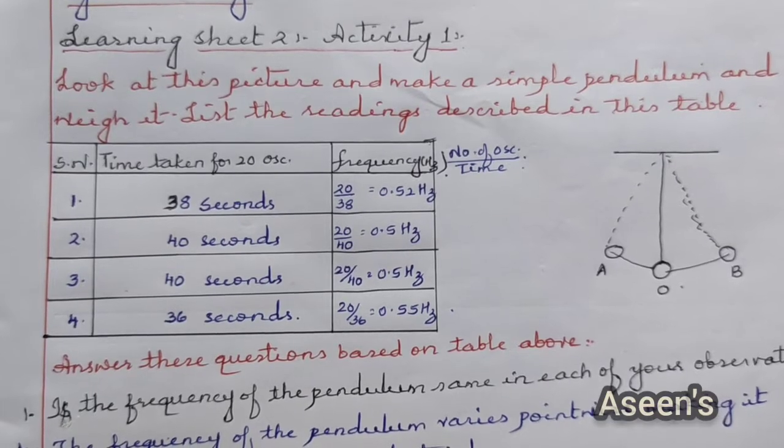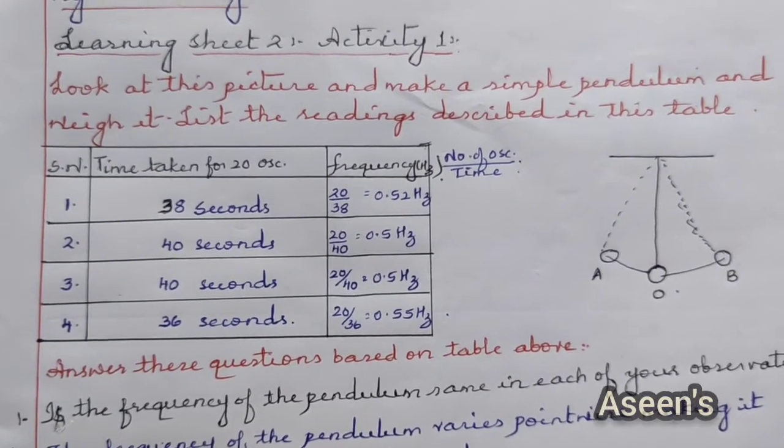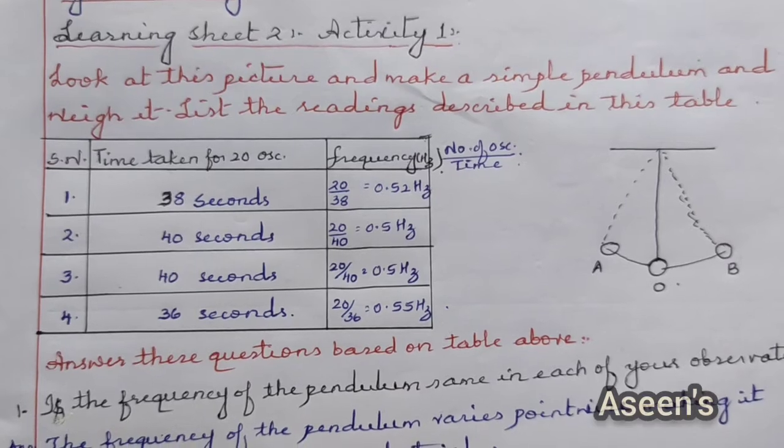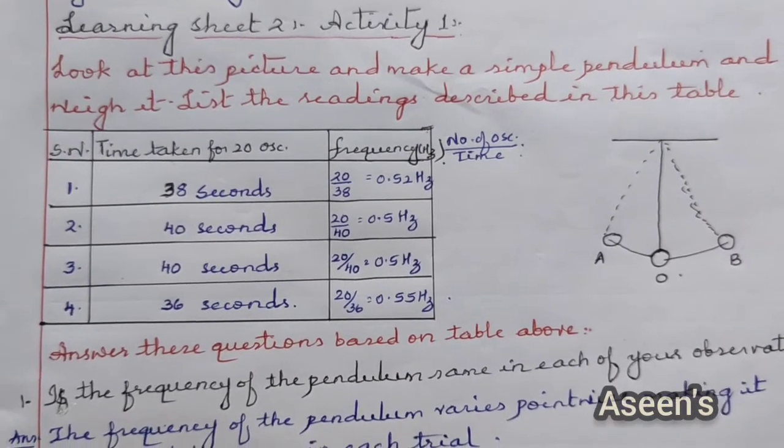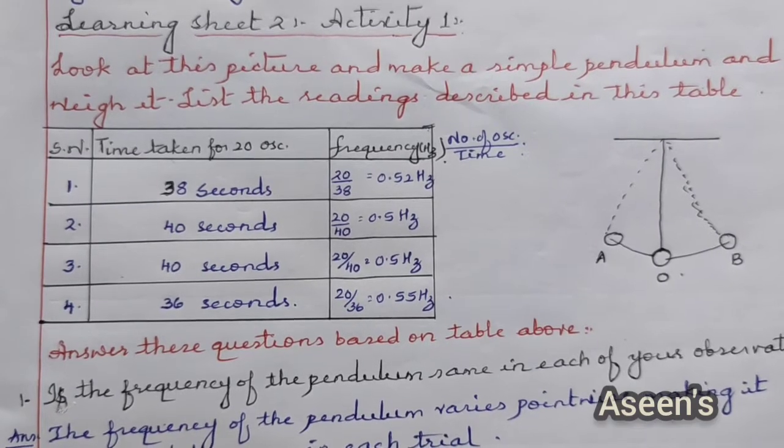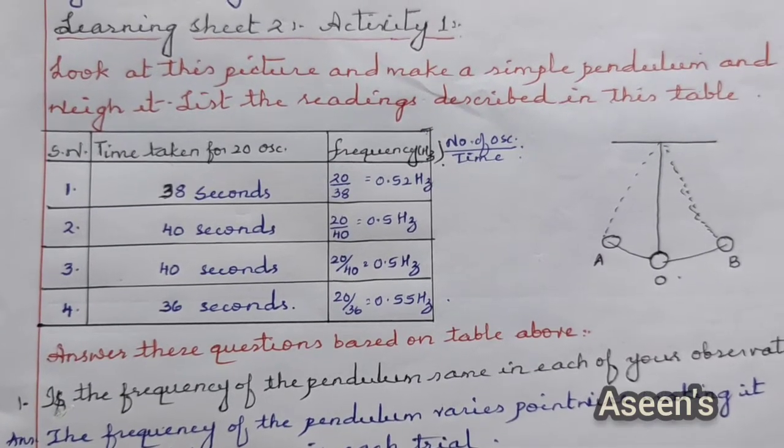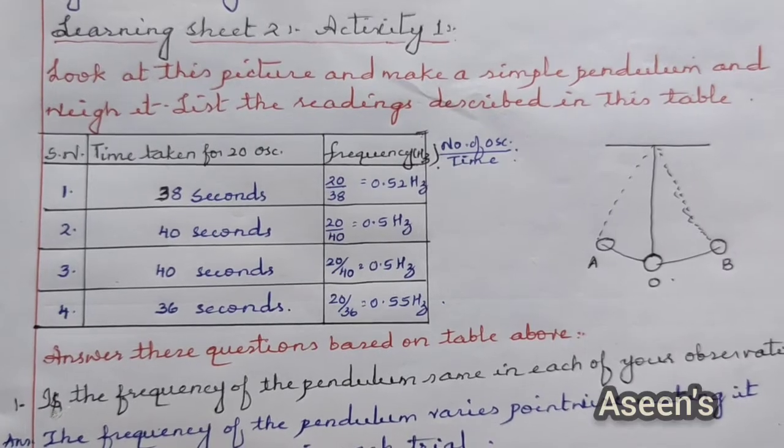Weigh it and list the readings described in this table. Basically, you have to make a pendulum and you are supposed to note down for the four trials. The tabular column contains two columns which need to be filled.